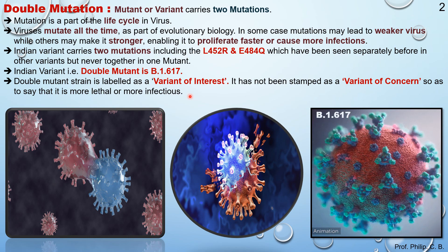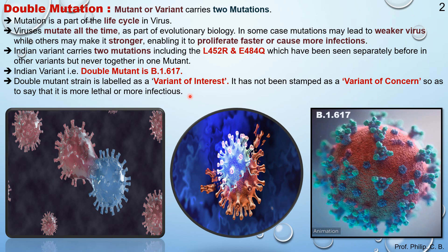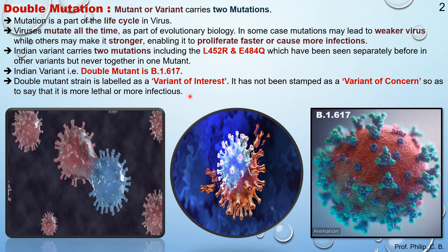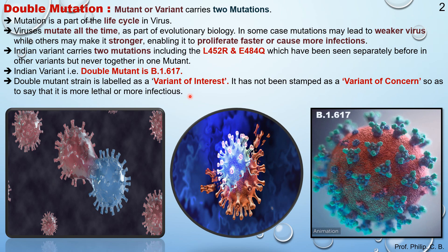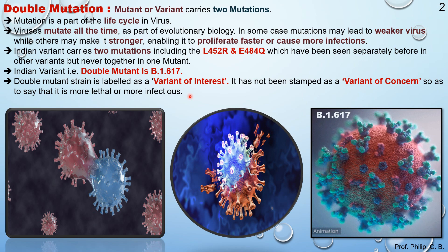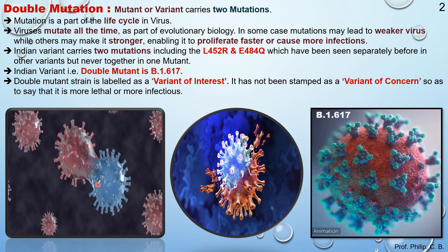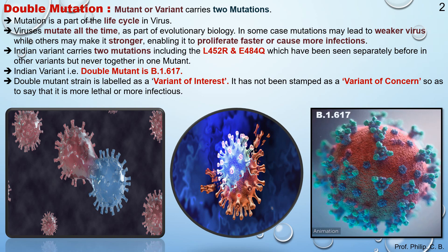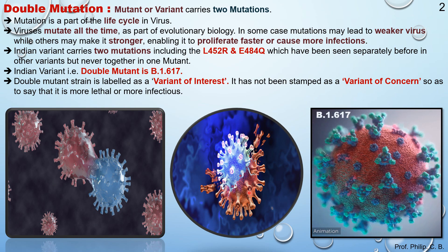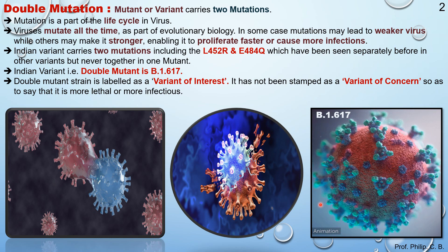This double mutant strain has also been seen in various other countries where it has already caused havoc, such as the UK, US, specifically Brazil, California, and South Africa. In Brazil, the proliferation and cause of infection has been very severe. A few more images of the double mutation can be seen here, showing two different mutant variants or strains coming together.